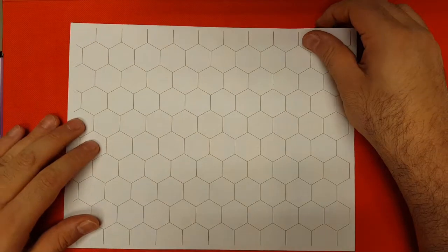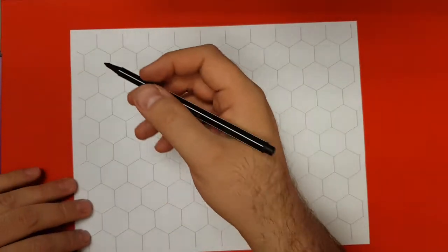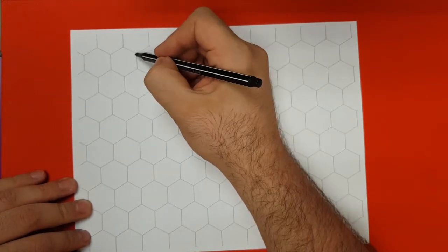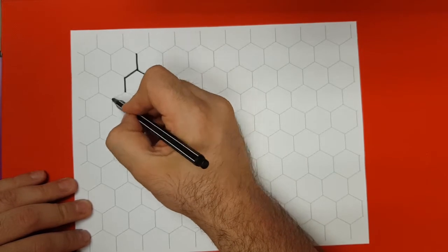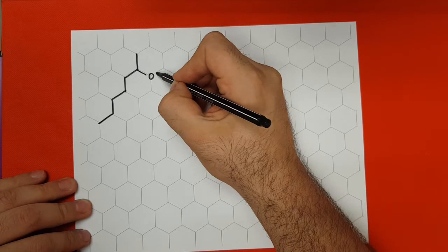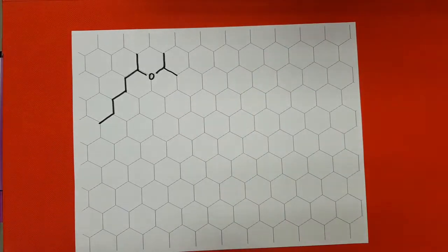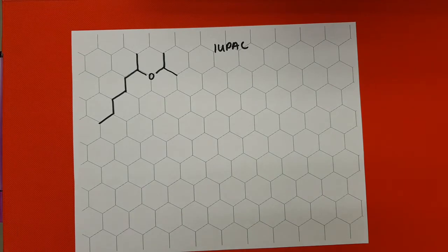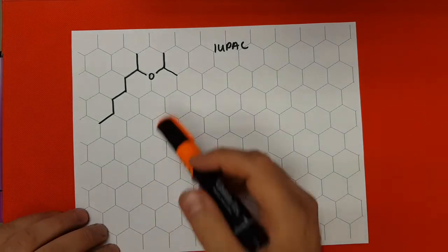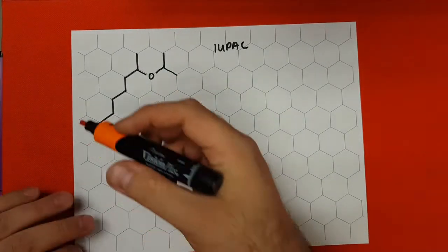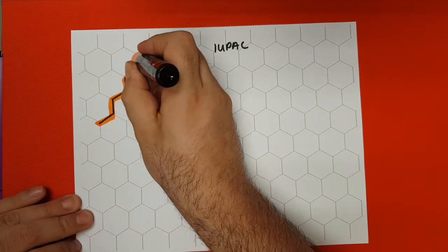Just a quick example: I'm going to draw an ether, and this ether might be here. We're going to draw this one — make it pretty twisty. So if we're going to do IUPAC, I find my longest chain. And my longest chain is going to be 1, 2, 3, 4, 5, 6, 7. And we're going to start coloring this chain, which is 7.